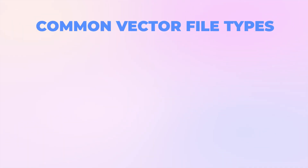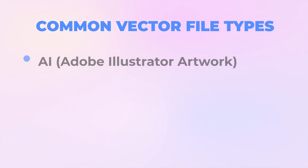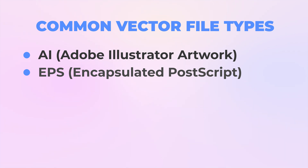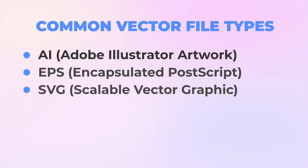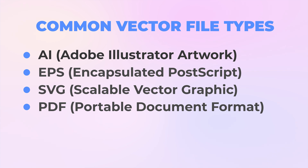Here are some common vector file types. AI is the Adobe Illustrator artwork file. EPS is encapsulated postscript. SVG is scalable vector graphic. And PDF is portable document format.